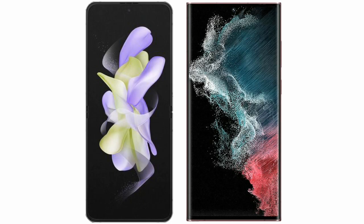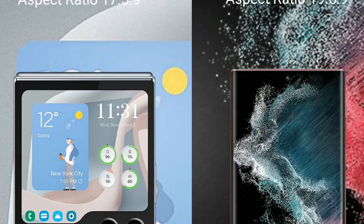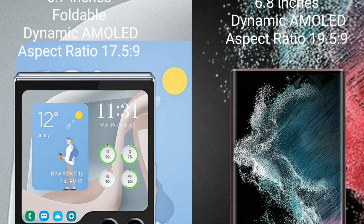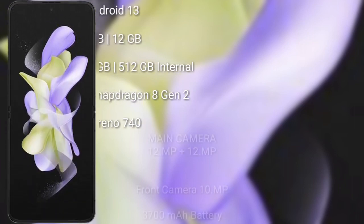I will compare the new Samsung Galaxy Z Flip 5 with the Samsung Galaxy S22 Ultra. The Samsung Galaxy Z Flip 5 comes with a 6.7-inch foldable dynamic AMOLED display with an aspect ratio of 4:9. The Samsung Galaxy S22 Ultra has a 6.8-inch dynamic AMOLED display with an aspect ratio of 5:9.